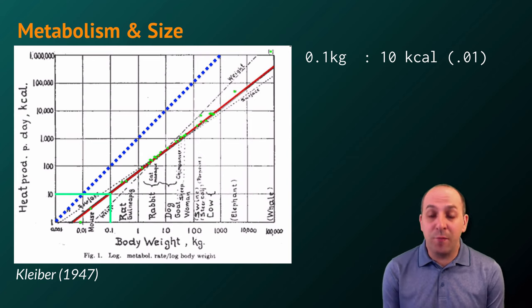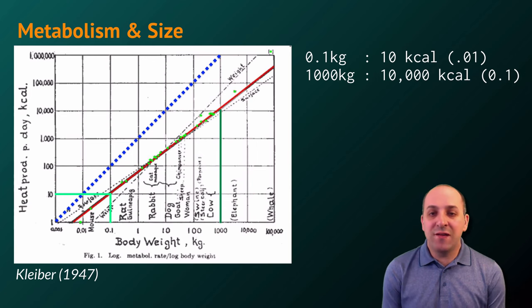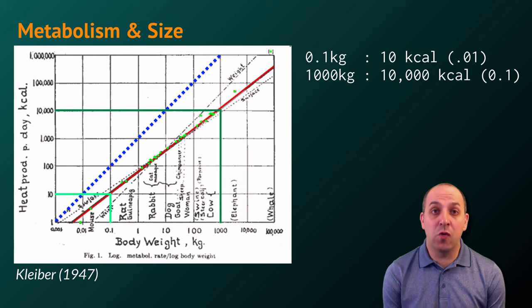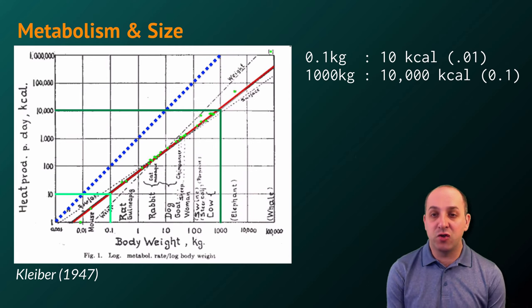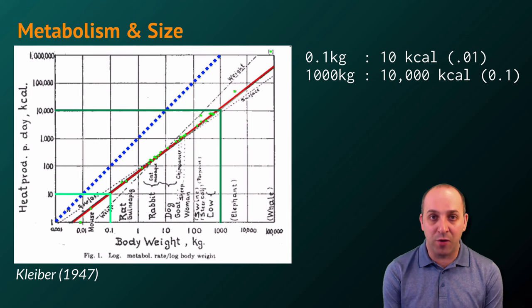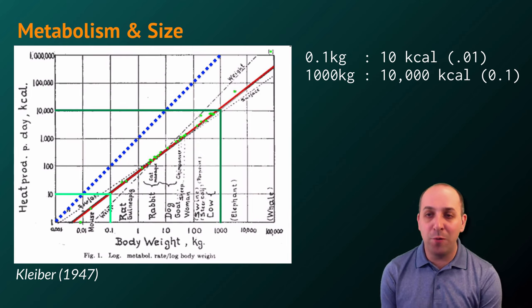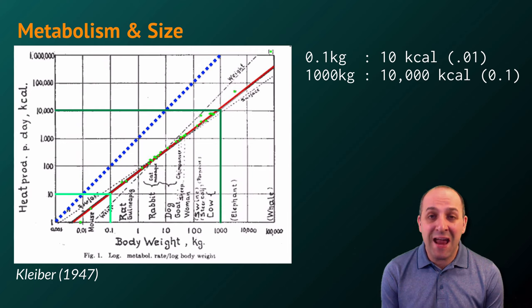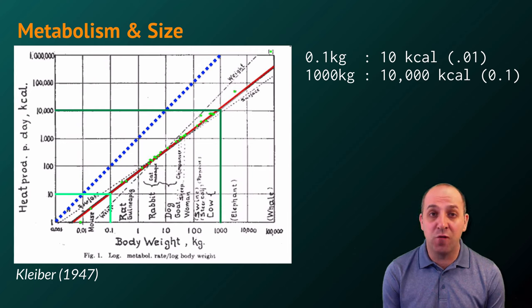Interestingly, an organism with a mass of 1,000 kilograms, something more akin to a large mammal like a hippo or a rhinoceros, will have a general energy expenditure of 10,000 kilocalories per day. It's not surprising that larger animals expend more energy, but what is surprising is the change in the ratio that we see. Notice that the ratio for the larger animal is actually 10 times lower than the ratio for the smaller animal.